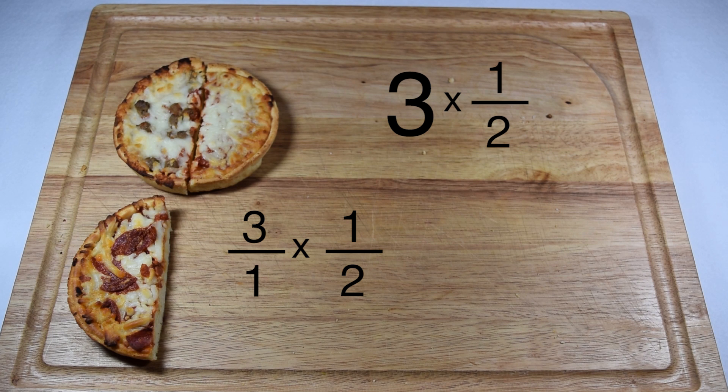To do that, or to change any whole number into a fraction, our whole number becomes our numerator and we use a denominator of one to tell us we need one piece to make a whole and we have a numerator of three pieces. So three over one would be the same as simply having three.